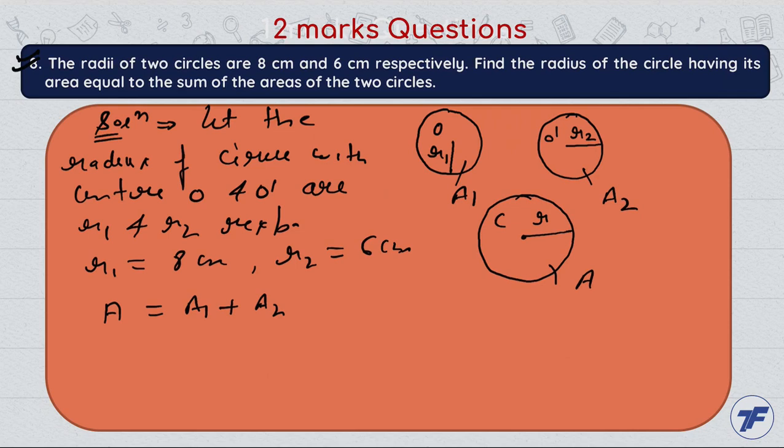area of first circle and A2 be the area of the second circle. Now apply the condition: π r² equal to π r1² plus π r2².